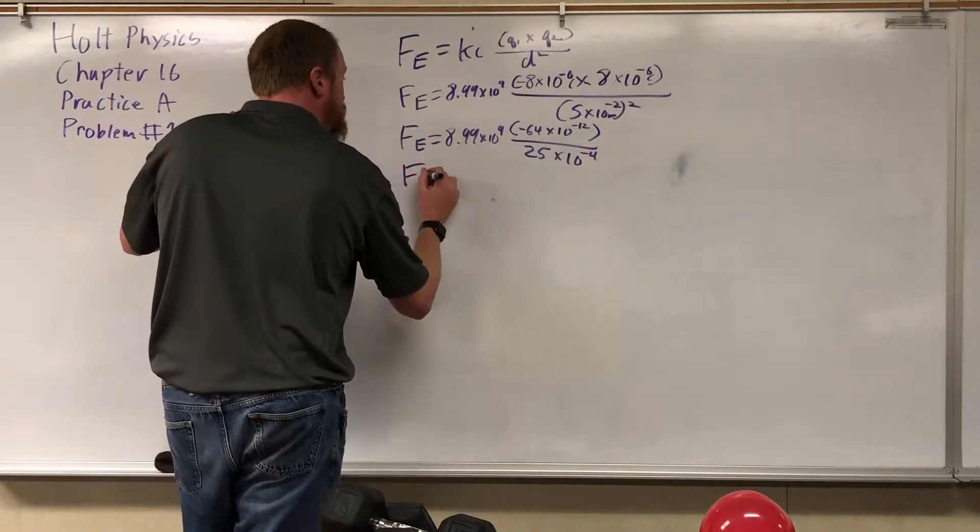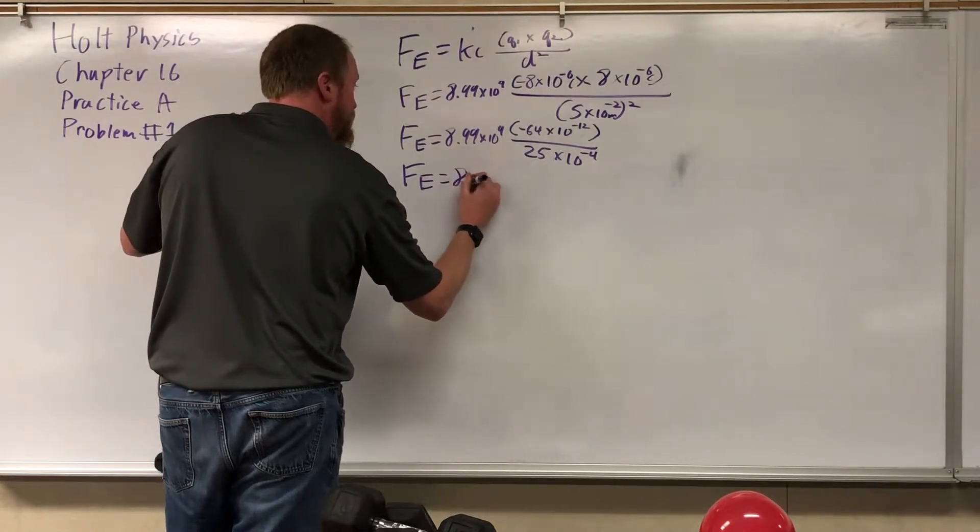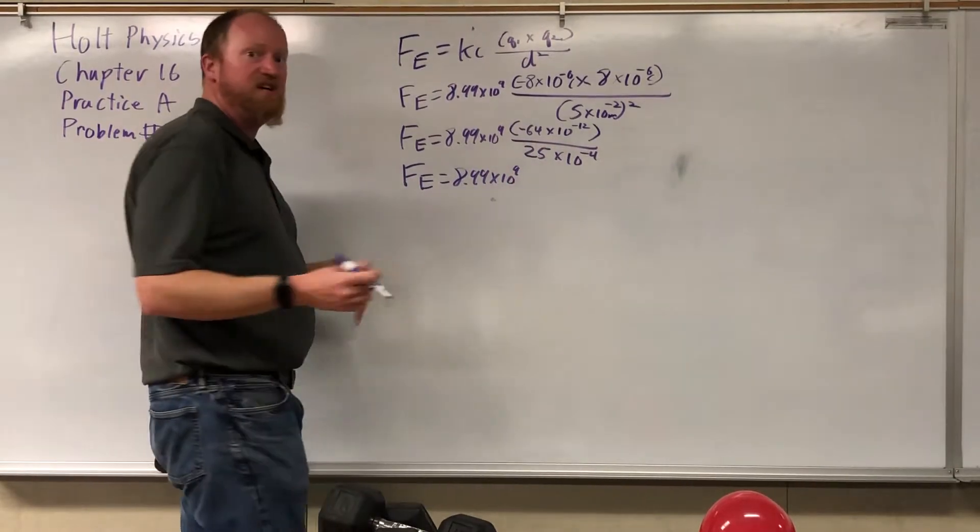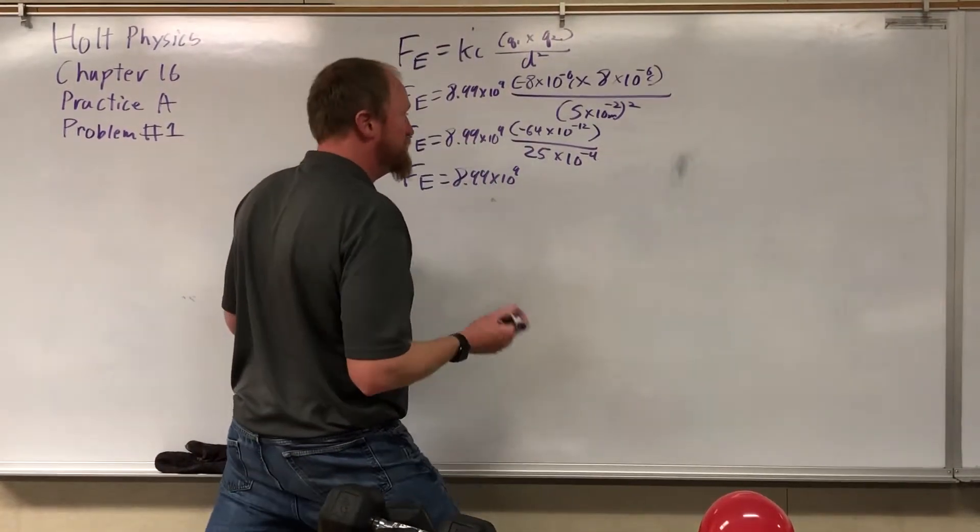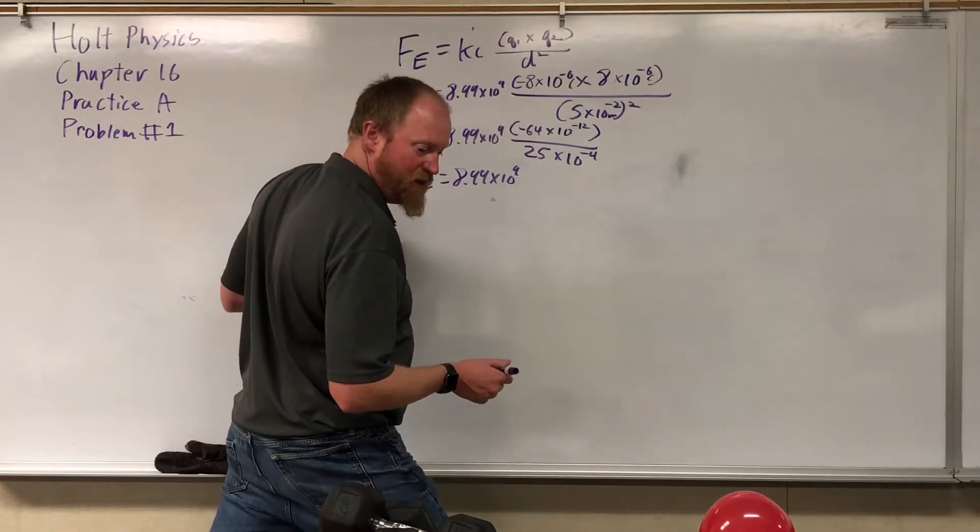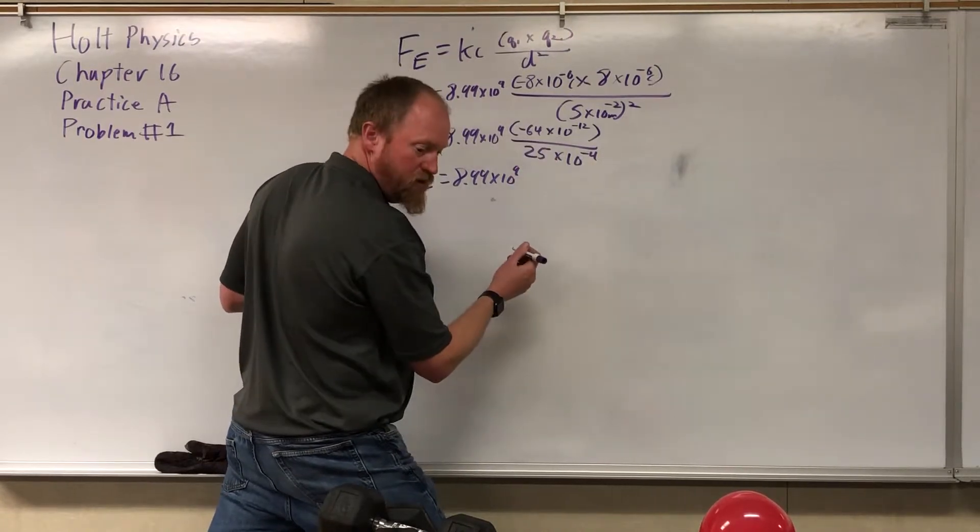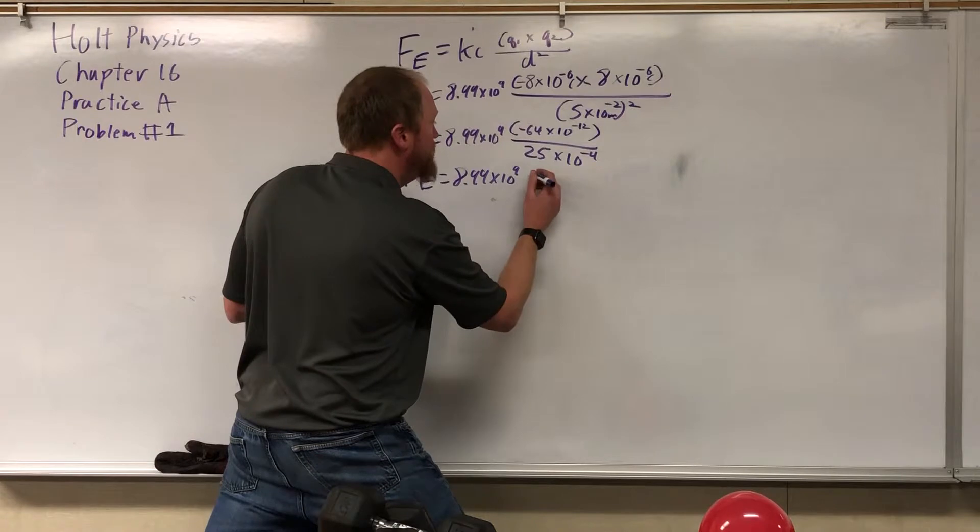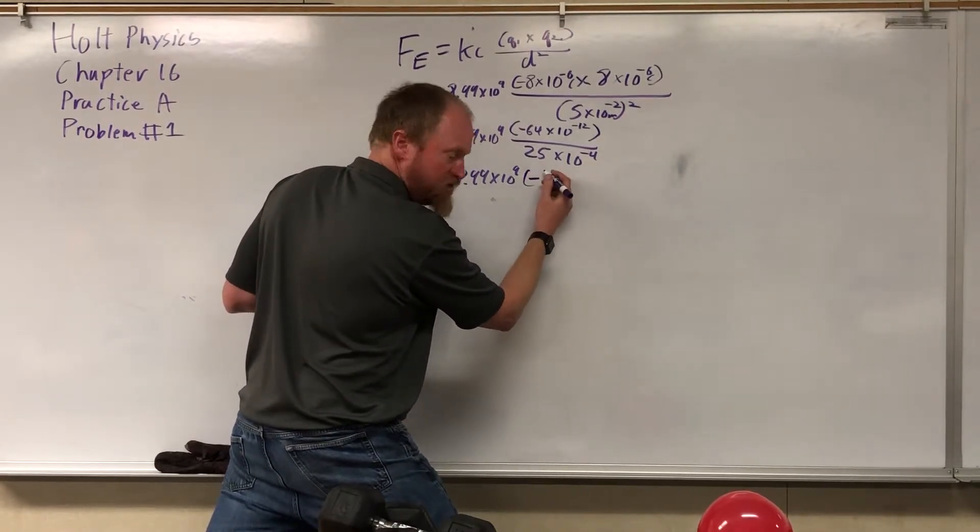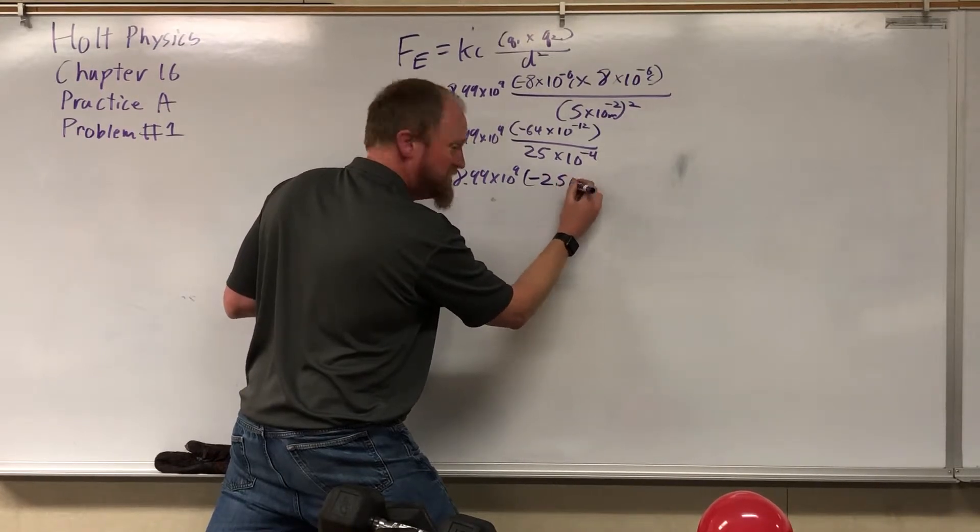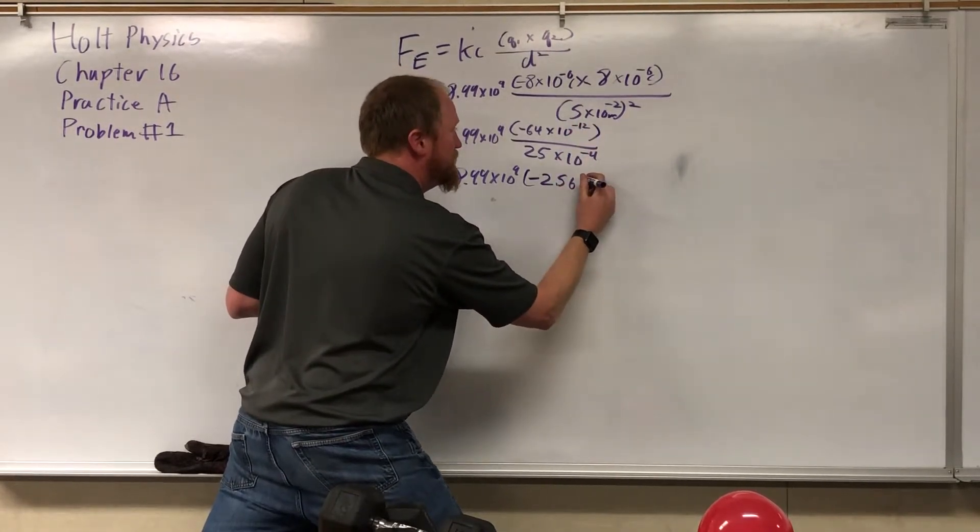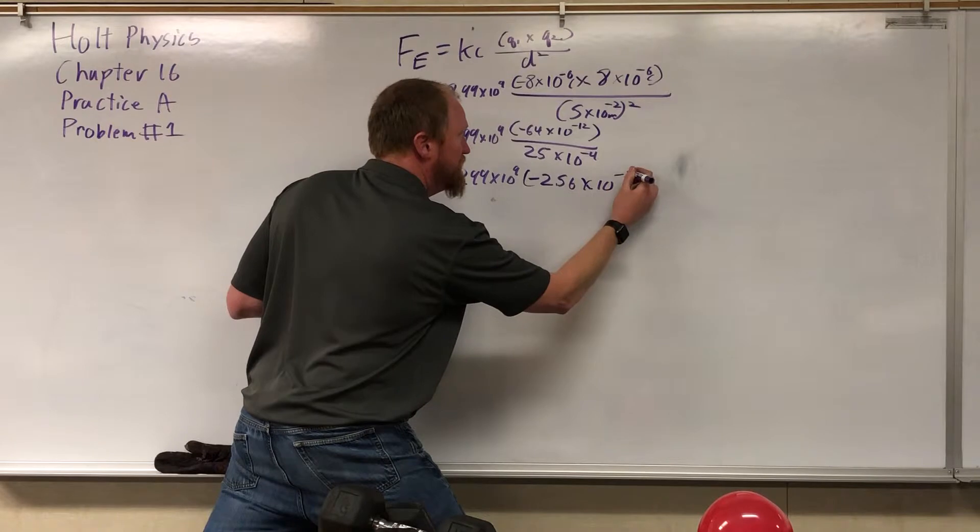Onward. Next step. And we're just doing math here. You know, you can put this on a calculator. One of the beautiful things about scientific notation is you can avoid a lot of calculator work and a lot of zeros that might tend to, you know, you hit the zero key one too many times and you've completely screwed it up. You don't have that problem with this. So negative 64 divided by 25, you get negative 2.56 and then 10 to the negative 12 divided by 10 to the negative four is 10 to the negative eight.